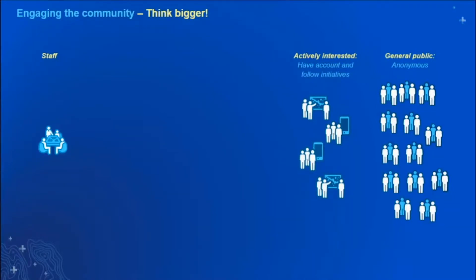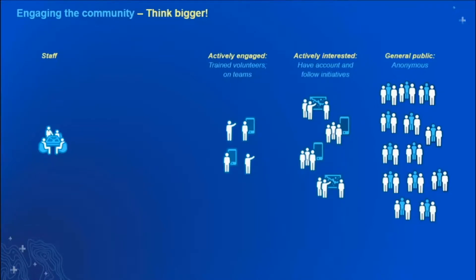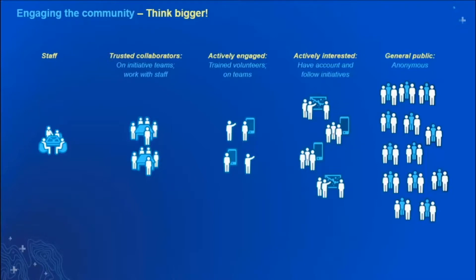But thinking bigger — what if you could have some of those people have identities in your system and use their identity to actively engage them? Maybe they can follow what you're doing or you can message them. Beyond that, maybe you can recruit some of those people to become active trained volunteers on initiatives and projects. Going even more deeply, what if your community included members outside of your organization — from nonprofits, government agencies, universities, or even the commercial sector — trusted collaborators who have domain expertise and data that you really need?